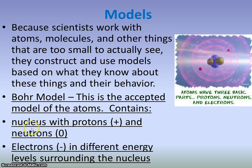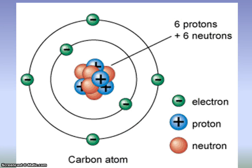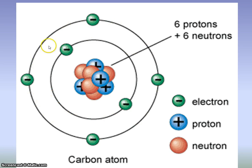Atoms have three basic parts: protons, neutrons, and electrons. Here is a great Bohr model of a carbon atom. This is a carbon atom — it has six protons and six neutrons, located in the nucleus. Protons have a positive charge; neutrons have a neutral charge. And then you see the electrons are surrounding and orbiting that nucleus — there are six of those as well, arranged in these orbitals orbiting the nucleus.